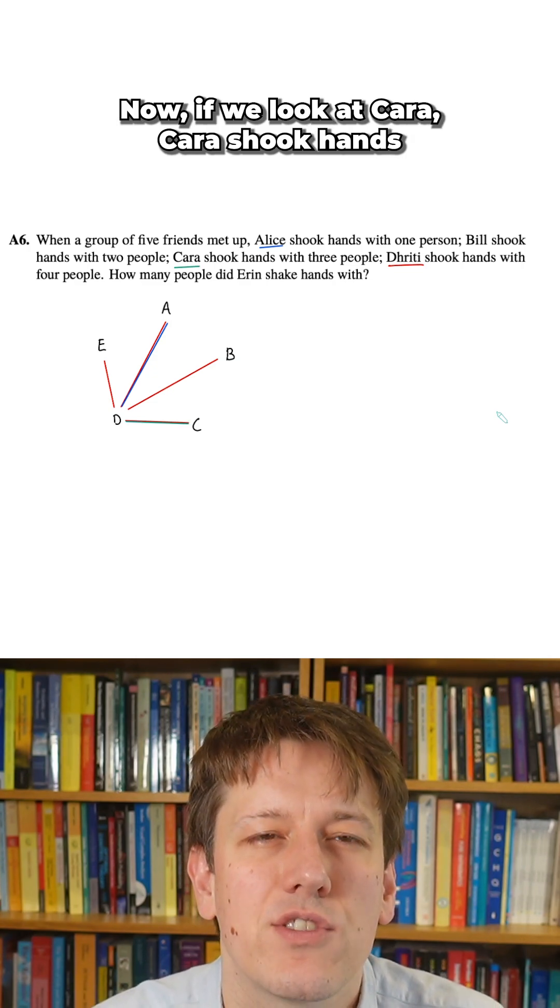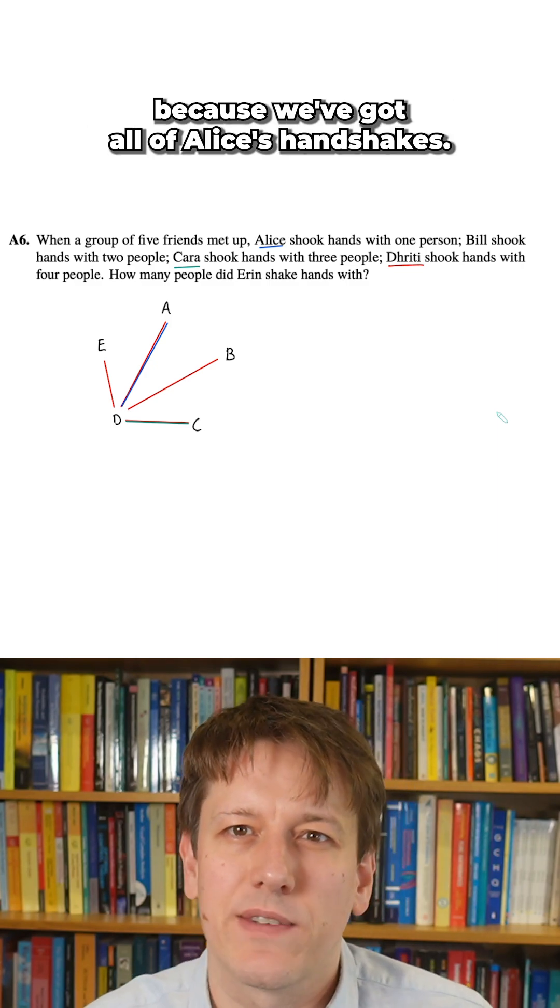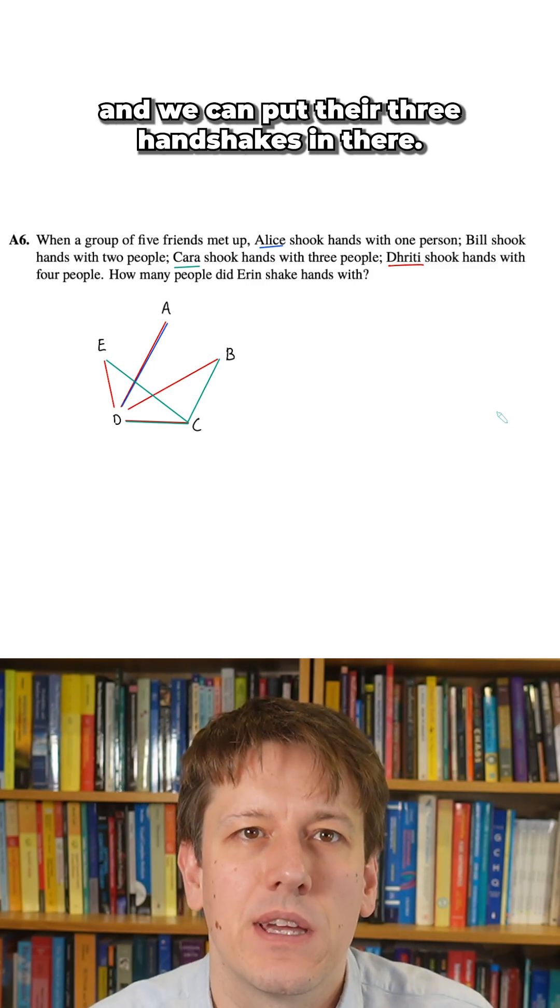Now, if we look at Kara, Kara shook hands with three people, but we know not with Alice because we've got all of Alice's handshakes. So Kara actually shakes hands with everybody else, and we can put their three handshakes in there.